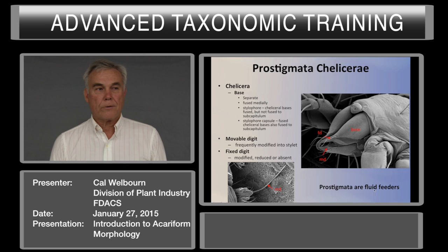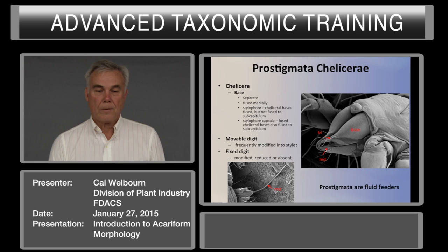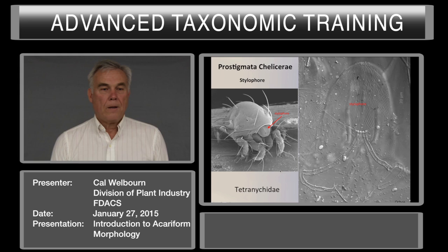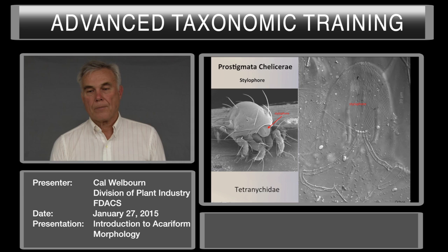All Prostigmata are fluid feeders, and this affects how their chelicerae are modified. In this figure, we see the cheliceral base, fixed digit, and movable digit. For a tetranychoid, the movable digit is actually a pair of movable digits that come together to form a long stylet for piercing plant tissue. In the case of the tetranychoids, the stylophore is retractable—the cheliceral stylets are actually retracted back into the body.